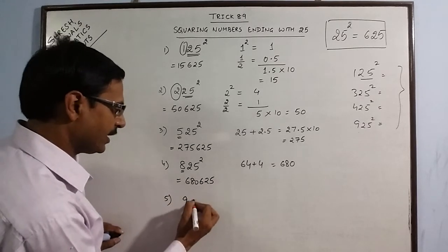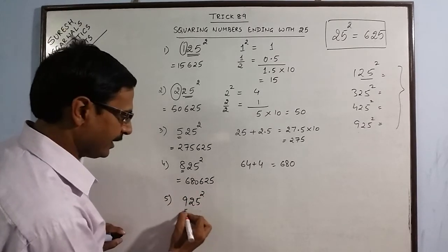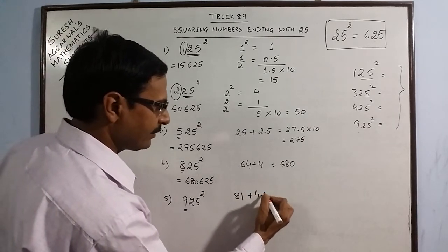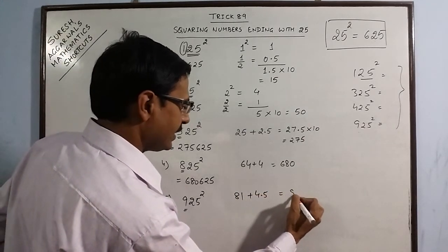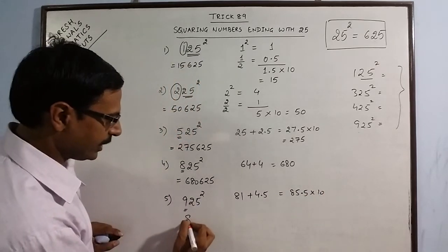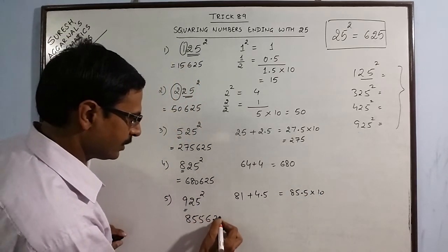Further, say we have 925 square. We have 9. So 9 square is 81. Half of 9 is 4.5. This is 85.5 multiplied by 10, 855. So 855625 is your square.